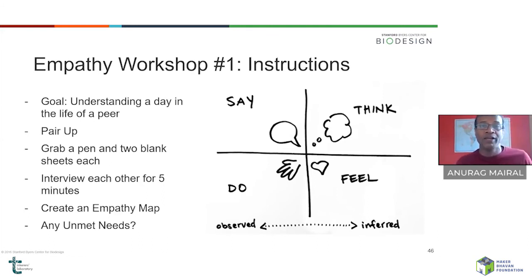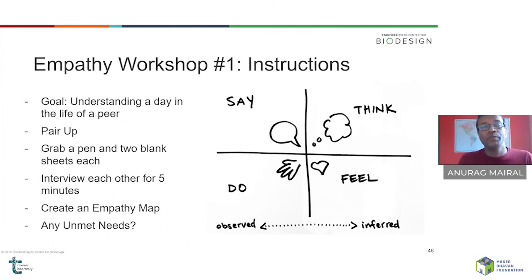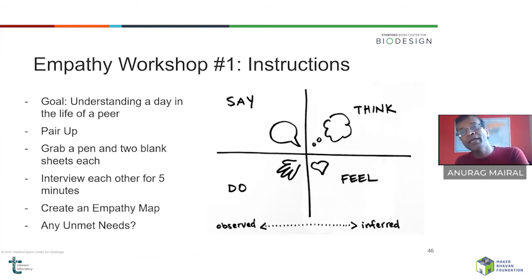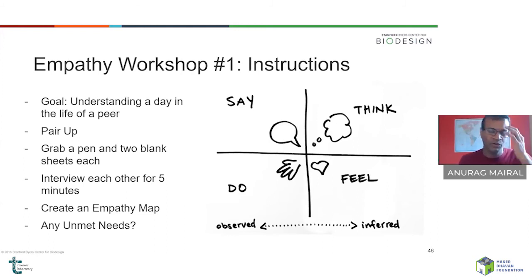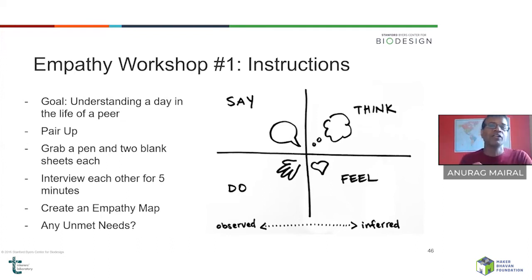Each of these observations allows you to start thinking about unmet needs and articulate them. For example, from the desk observation: 'There is a need for a working platform for college-going students participating in online classes so that they can be productive and improve their grades.' You can form a very structured needs statement from a single observation. From the notes you have, you could come up with five or ten such statements.